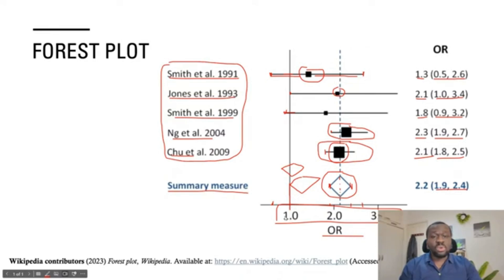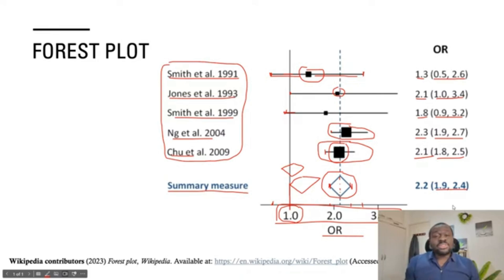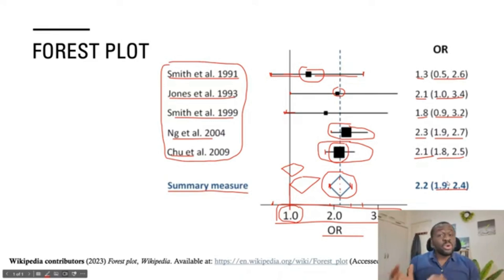Another thing to know: an odds ratio of 1.0 means there is no statistical significance — any association between exposure and outcome is likely purely due to chance. Anything above an odds ratio of 1.0 indicates statistical significance, and anything below 1.0 also indicates statistical significance — positive or negative impact — but statistical significance nonetheless. Only 1.0 means no statistical significance.